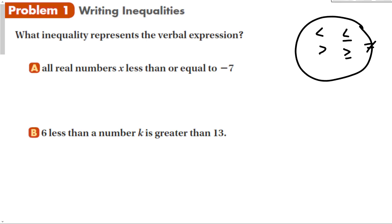So, getting back to the problem: all real numbers x less than or equal to negative 7 — we're just drawing out the inequality of what the sentence says. Next: six less than a number k is greater than 13. Don't forget our rules — we want six less than k is greater than 13, but not greater than or equal to.